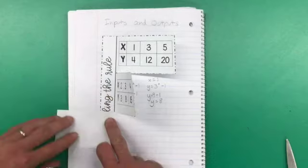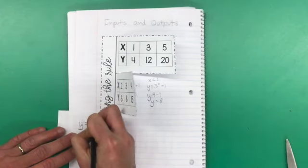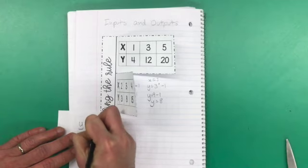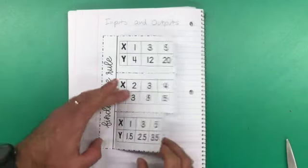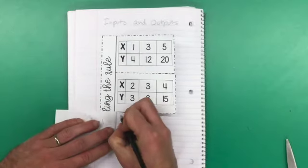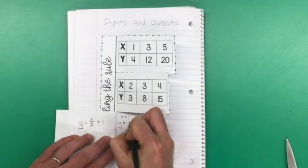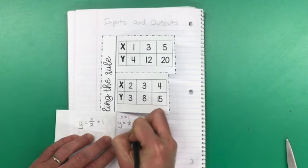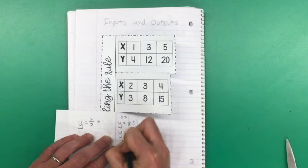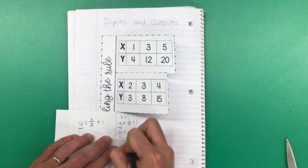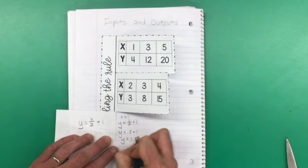Let's try it out. Let's try it with 1. X equals 1. So we substitute x for 1. So that's 1 divided by 2 plus 1. Y equals 1 divided by 2 is 0.5 plus 1. So y equals 1.5.